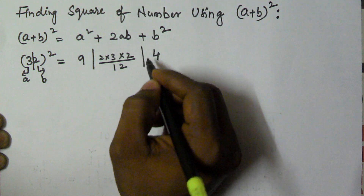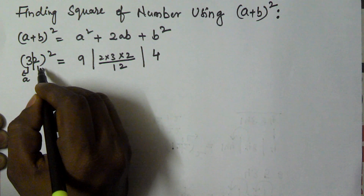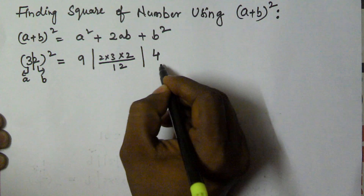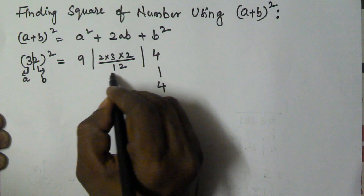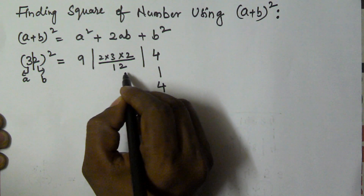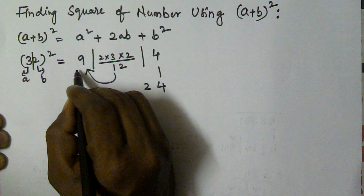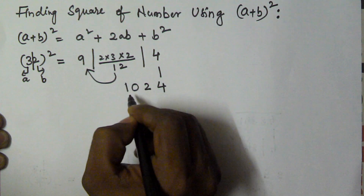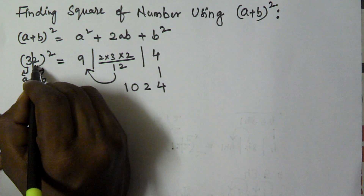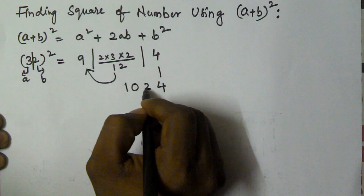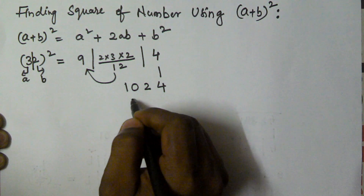And then b² is 4. Now the right-most part contains only one digit, so I will start from the right-most part and take the last digit as it is. Since the middle value 12 contains two digits, I take 2 as it is and carry the 1 to the left, giving 9 + 1 = 10. So the result is 1024. That is why 32² equals 1024.